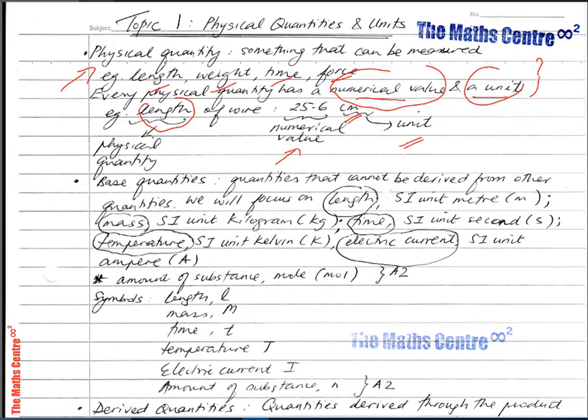Physical quantities can be classified into two groups: base quantities and derived quantities. Base quantities are quantities that cannot be derived from other quantities.